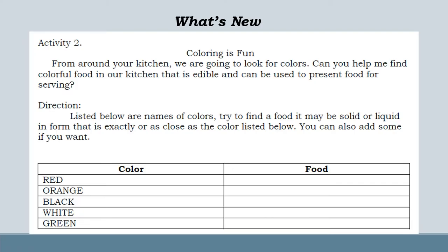What's new? Activity 2 — Coloring is fun. From around your kitchen, we are going to look for colors. Can you help me find colorful food in our kitchen that is edible and can be used to present food for serving? Direction: Listed below are names of colors. Try to find the food — it may be solid or liquid in form that is exactly or as close as the color listed below. You can also add some if you want.